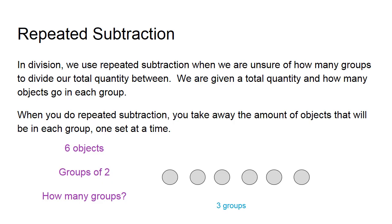For repeated subtraction, we use it when we're unsure of how many groups to divide our total quantity between. In this case, we're looking for the groups. We're given a total and we're given how many objects will go in each of those groups. When you do repeated subtraction, you take away the amount of objects that will be in each group, one set at a time.